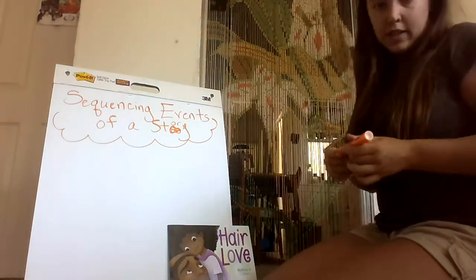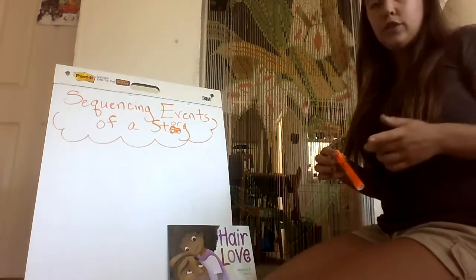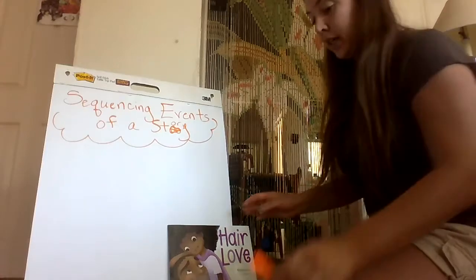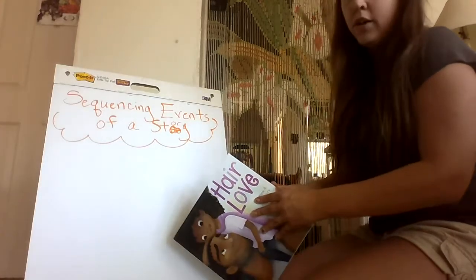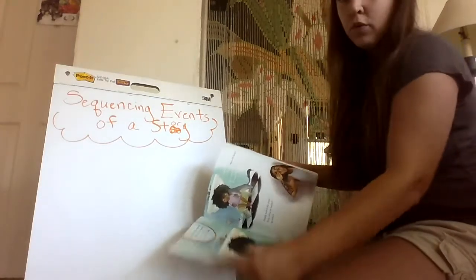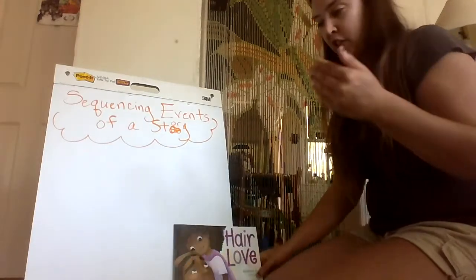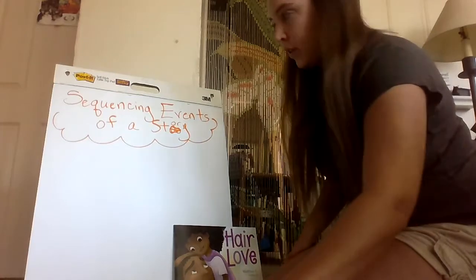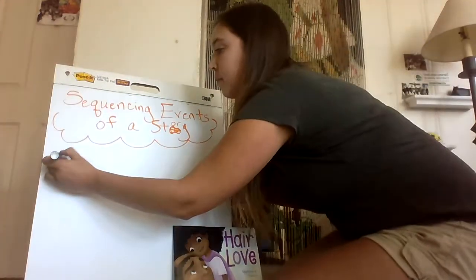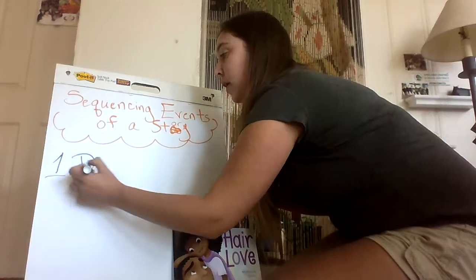And when we were sequencing the events, we first looked in the book. We did a picture walk of the stories where we just tried to work on remembering what was happening by turning the pages and just saying a little bit about the book. So the first thing I'm going to put here is number one, do a picture walk.